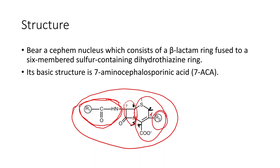There is also an R2 side chain attached to carbon 3. The R1 side chain is very important — any modification in R1 results in a change in the antibacterial spectrum. So if you want to increase gram-negative coverage, increase gram-positive coverage, or add anti-pseudomonal activity, you modify the R1 side chain. If you want to change the pharmacological properties, you modify the R2 side chain attached to carbon 3.